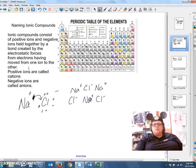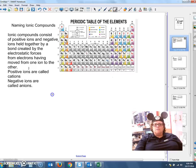that is typical of ionic compounds. So the attraction there is that positive negative attraction, that electrostatic force. Positive ions like sodium are called cations. Negative ions are called anions.